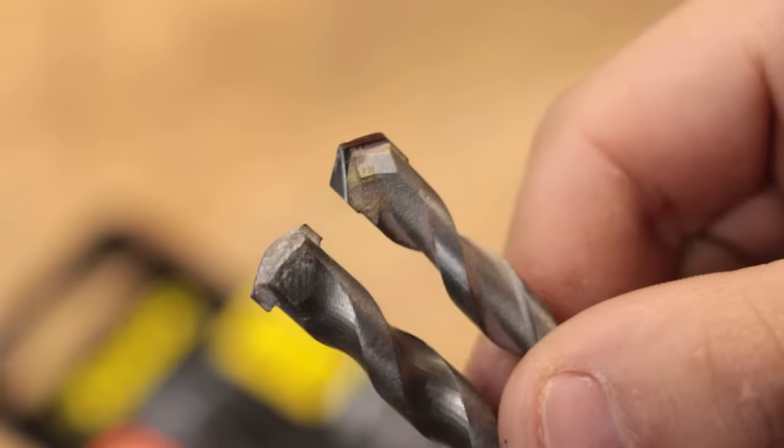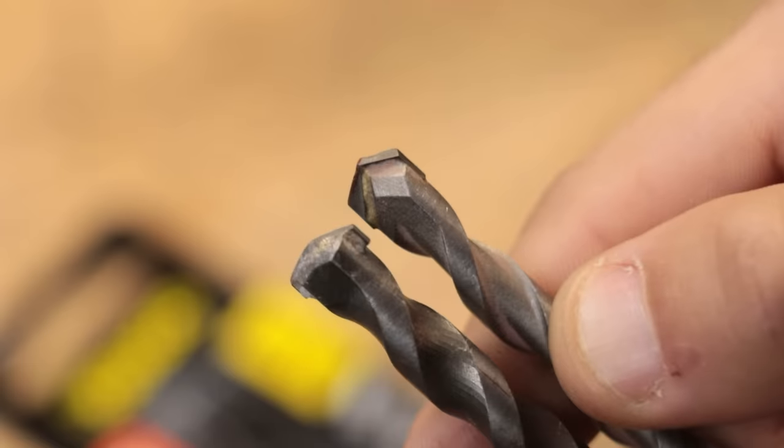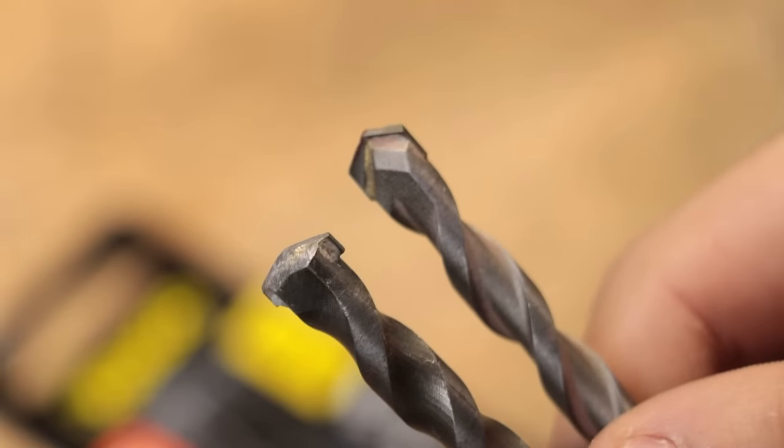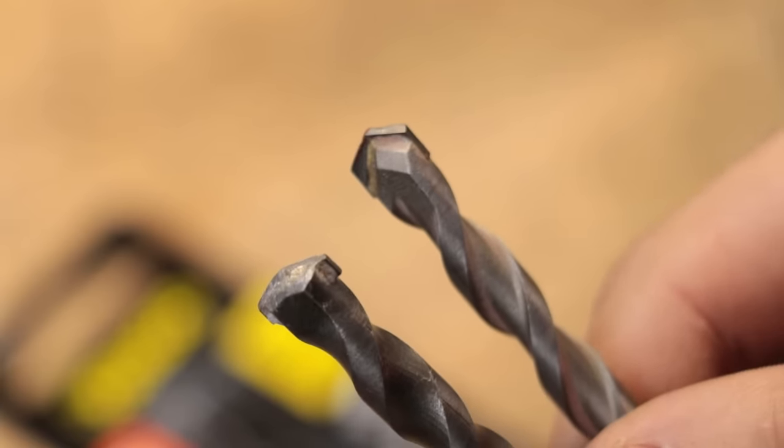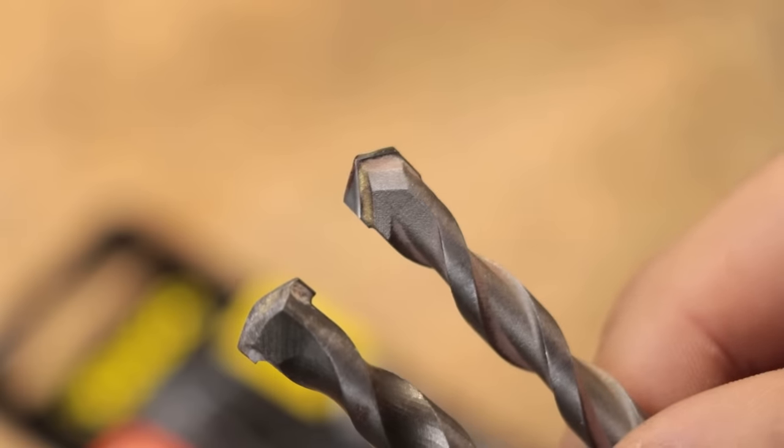And it should go without saying, this is a good quality masonry bit. This one that I have here is one of those $5 box of 10 masonry bits that you can get from the hardware store, and it's a bit of a mess. It barely cuts stone, so I wouldn't expect it to cut hardened steel.